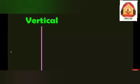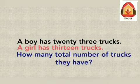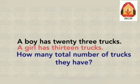Vertical means a line in a standing position. In this type of addition, the numbers are written one below the other and the addition symbol is put on the left side, and the sum is written below like this. So friends, let us try to solve this word problem in both horizontal and vertical way.